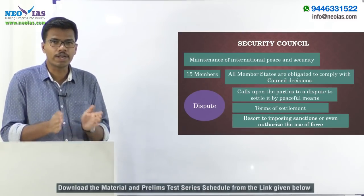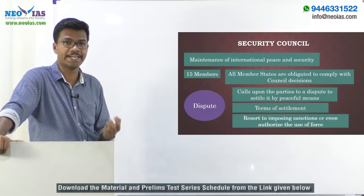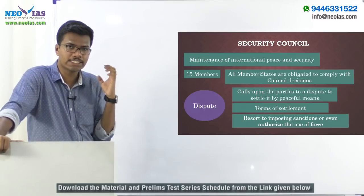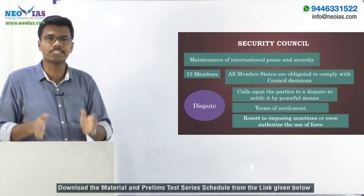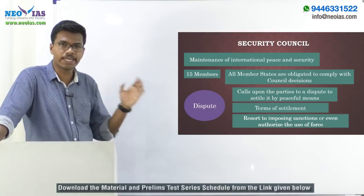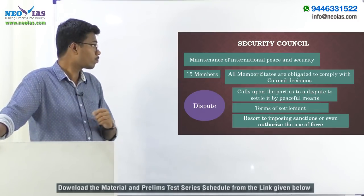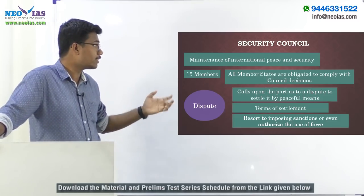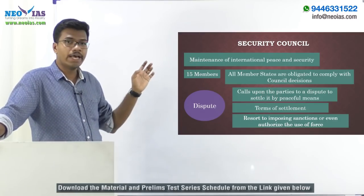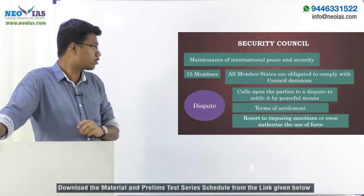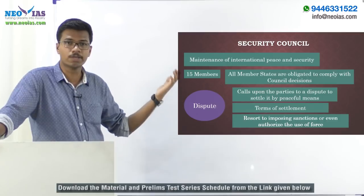The next principal organ is the UN Security Council, one of the most powerful organs of the United Nations. By the UN Charter, the primary responsibility of the Security Council is the maintenance of international peace and security. It has 15 members — 5 permanent and 10 non-permanent. All UN member states are obligated to comply with its decisions. In case of international disputes, the Security Council can call upon both parties to settle the dispute by peaceful means.